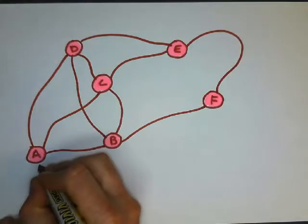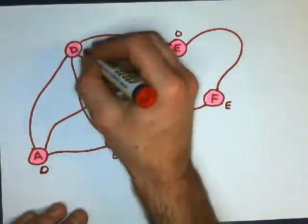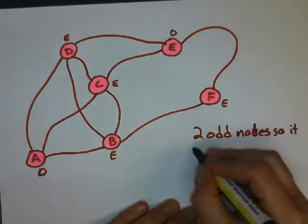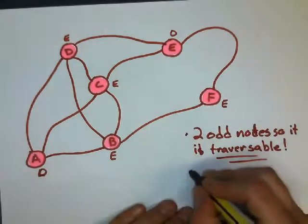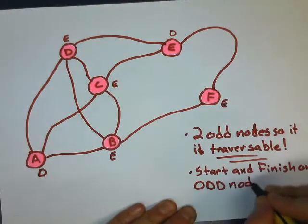So let's look at an example here. Let's look at this network. I'm going to label the nodes odd or even. That one's odd, that one's even, and that one's even. And it has two odd nodes, so it is traversable. And it's going to be a path. So we start and finish on the odd nodes.